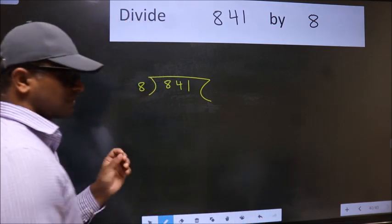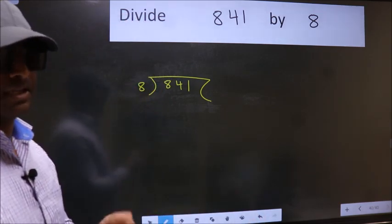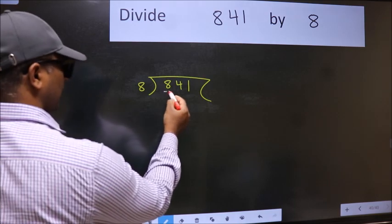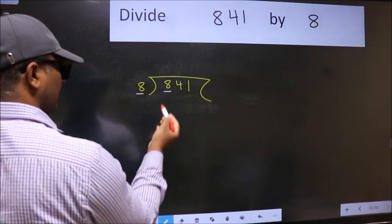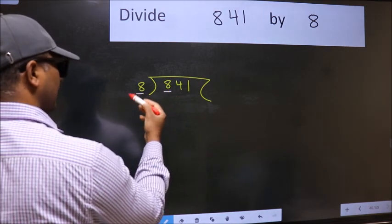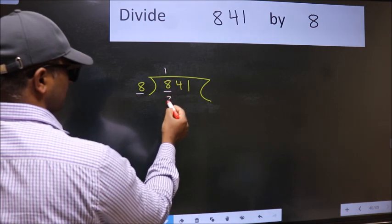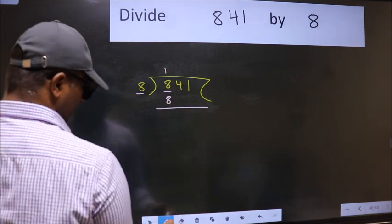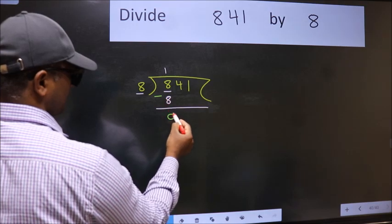This is your step 1. Next, here we have 8 and here 8. When do we get 8 in the 8 table? 8 once 8. Now, we should subtract. We get 0.